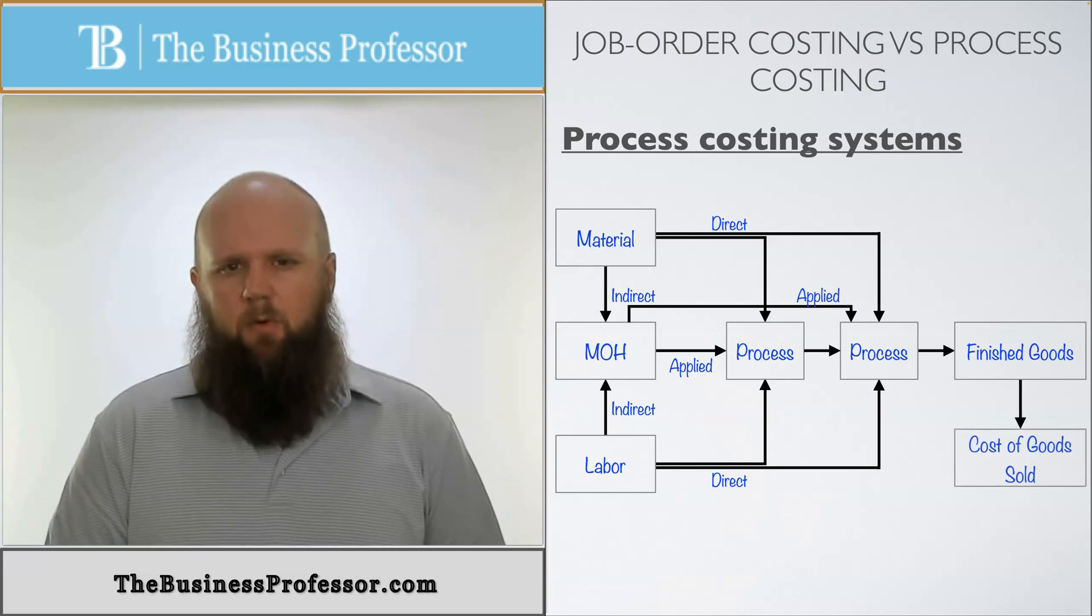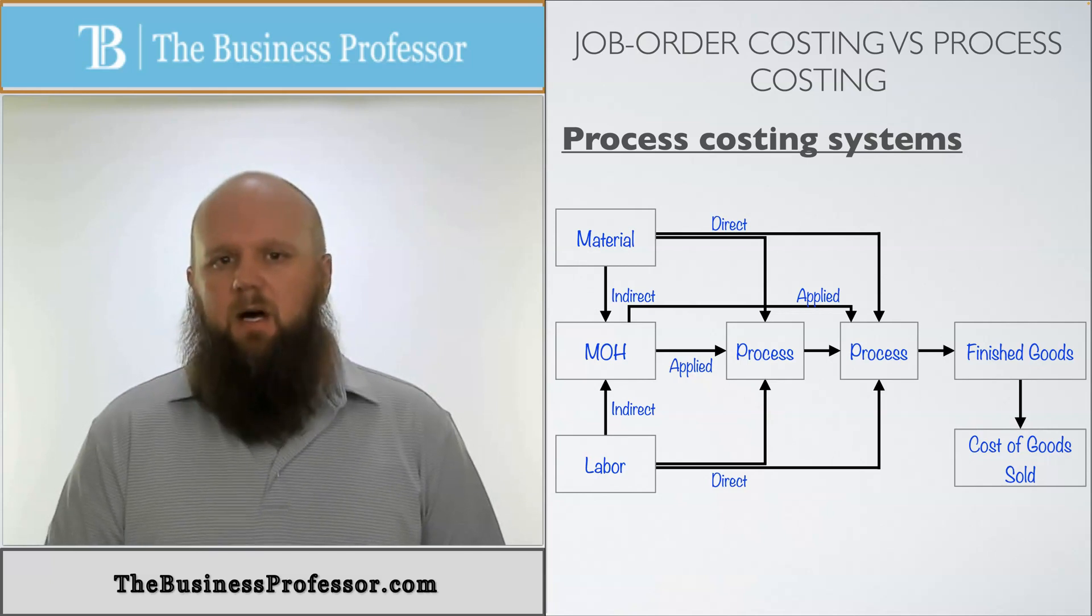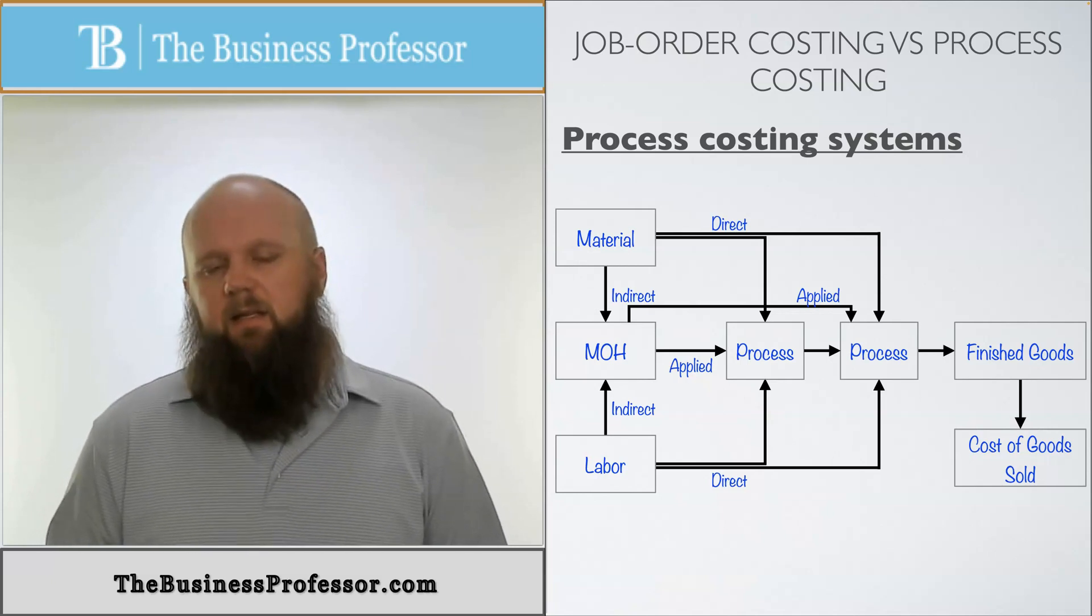The difference here is that job-order costing is done to one single job, whereas process costing the cost flows from process to process to process until it's finished.